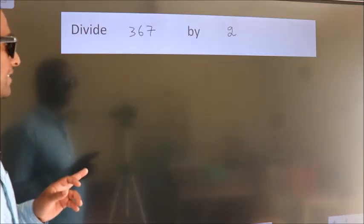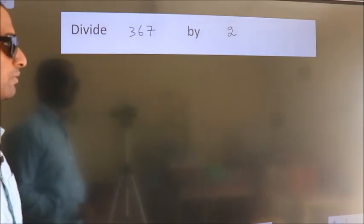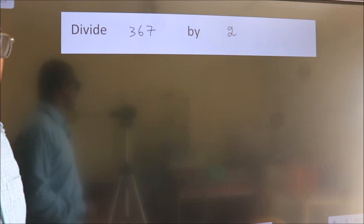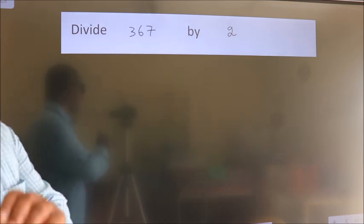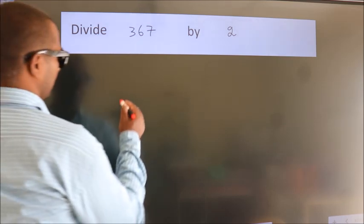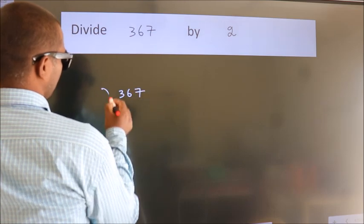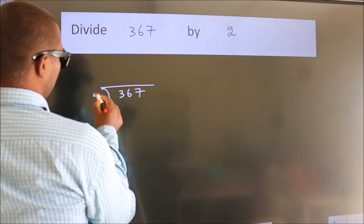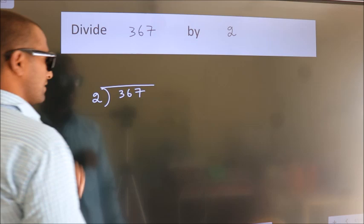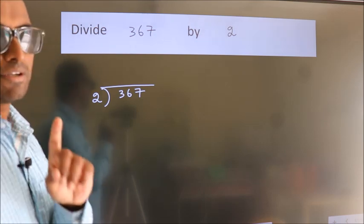Divide 367 by 2. To do this division we should frame it in this way. 367 here, 2 here. This is your step 1.